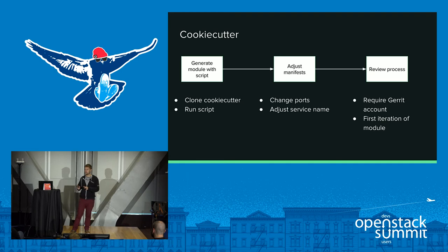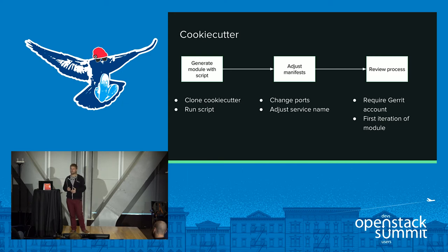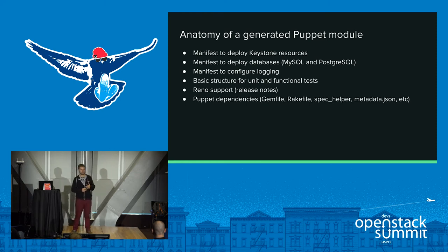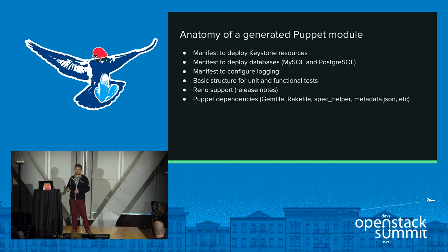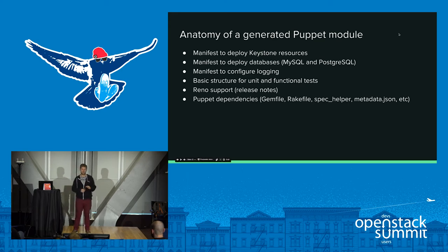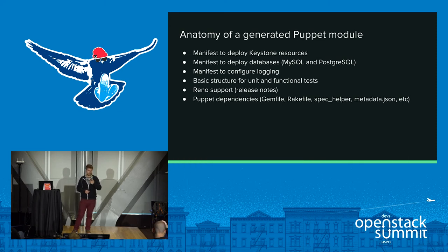We created cookie cutter because we don't want people to waste time always doing the same thing. When you generate the Puppet module with cookie cutter, you get manifests for Keystone resources, database management, logging, unit and functional testing, release notes using Reno — the official OpenStack project for release notes — and all the Puppet dependencies including metadata and so on. Everything is generated for you.